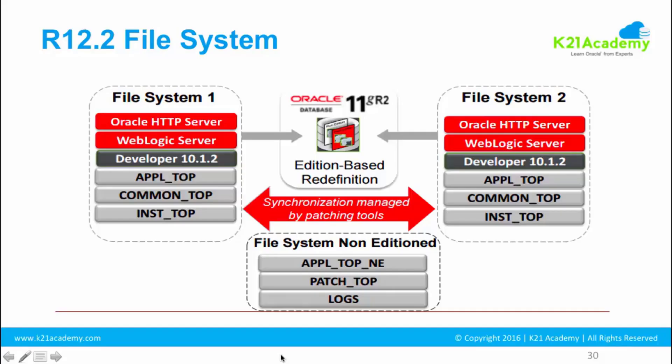First is the file system. We will have a dedicated module on EBS R12 file system, specifically 12.2 file system, and that we are going to cover after installation of Oracle eBusiness Suite. After installation I will show you how the file system looks like. This is how the application tier file system looks like in EBS 12.2. You have three file systems represented here: file system 1, file system 2, and at the bottom, file system non-editioned.